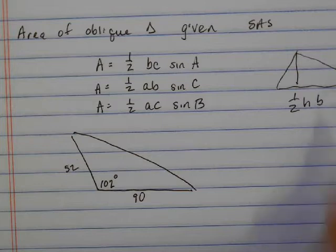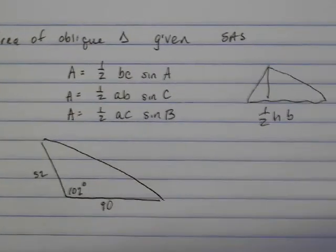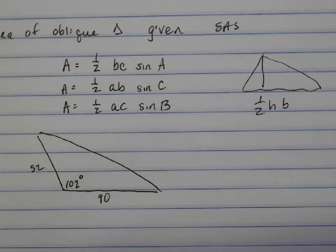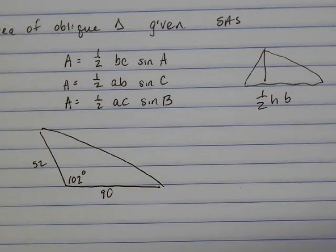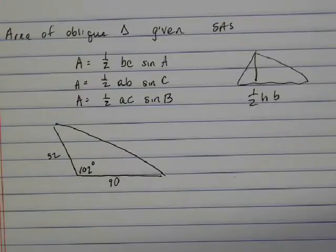A version of that formula would be using sine. If you'll notice, these three formulas say one-half of the sides times sine of the angle between the two.